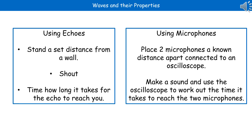Other ways to measure waves include using echoes — stand a set distance from a wall, shout, and time how long it takes for the echo to reach you. You can also use microphones by placing two microphones a known distance apart, connected to an oscilloscope, then make a sound and use the oscilloscope to work out the time it takes to reach the two different microphones.